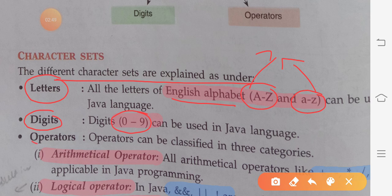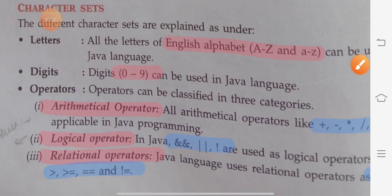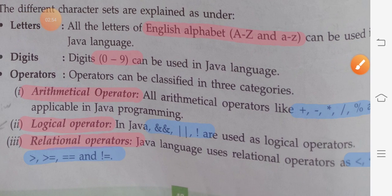Moving on to operators. Operators are symbols used to perform some calculation. For example, plus, minus, multiply, divide — all these are operators. Operators are mainly of three types: arithmetic, logical, and relational operators.